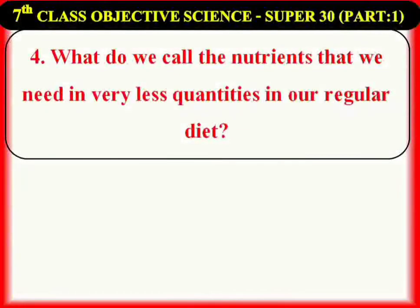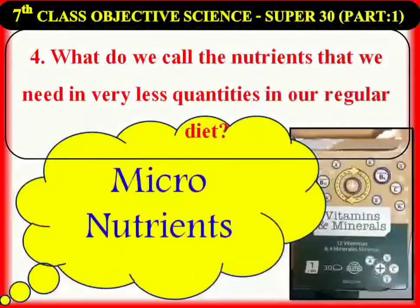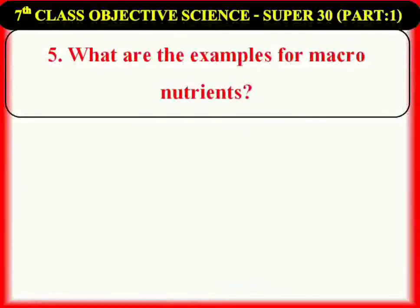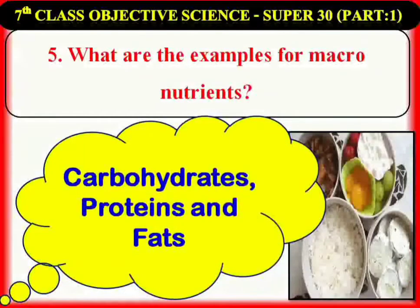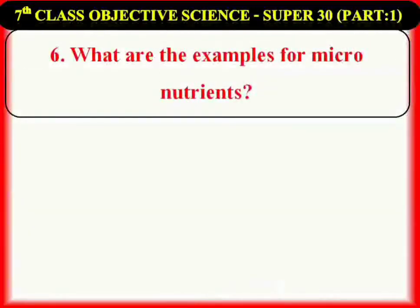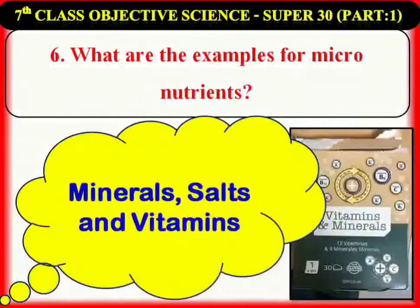What do we call the nutrients that we need in very small quantities in our regular diet? Micronutrients. What are the examples for macronutrients? Carbohydrates or carbs, proteins, and fats or lipids. What are the examples for micronutrients? Mineral salts and vitamins.